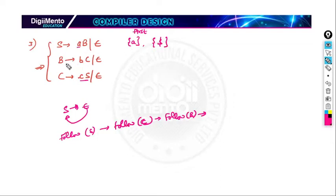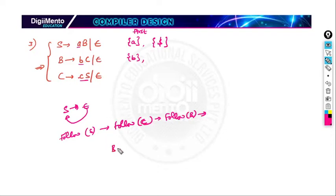Now let us come to the production B generates BC. From this production we get FIRST of B as small b. And FOLLOW of B is FOLLOW of S, which is dollar.